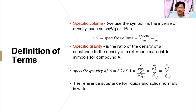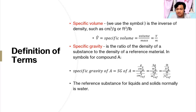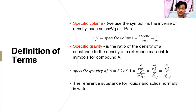Another term is specific volume, which is just the inverse of density — the reciprocal of density — such as cubic centimeters per gram and cubic feet per pound. We use the symbol V-hat for specific volume, which is volume over mass.